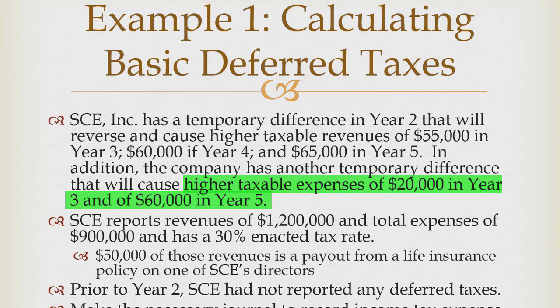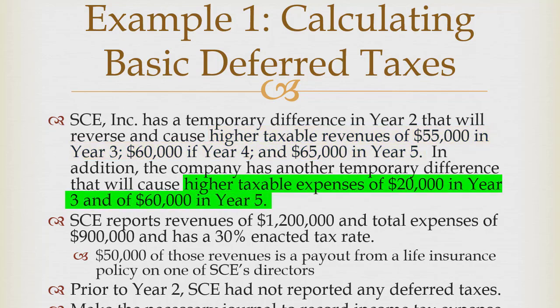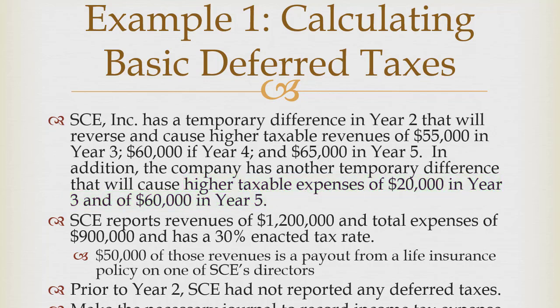If we're going to have higher revenues in the future, that means we have lower revenues now — it's just a difference in timing. If I'm going to recognize $55,000, $60,000, and $65,000 later, I must not be recognizing it now. Similarly, if I'll have higher expenses of $20,000 and $60,000 in years three and five respectively, I must not have those expenses this year. SE also reports revenues of $1.2 million and total expenses of $900,000.